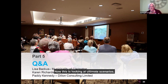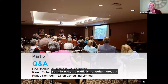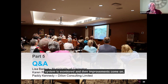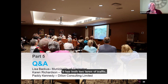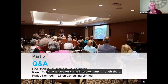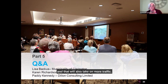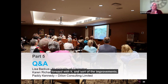Those 40,000-vehicle figures are ultimate scenario numbers — right now traffic is not quite there, but as traffic increases the system is monitored and improvements come online. For example, Highway 57 is being widened to four lanes, which will increase volume significantly. Aspen Springs already has two lanes of traffic, two lanes of parking, and cycling lanes. Green Road is currently two lanes and will ultimately be widened as well. Development and traffic improvements move forward together.